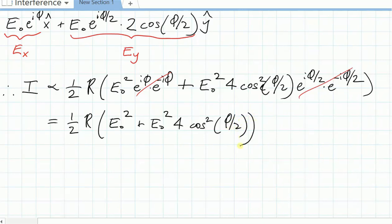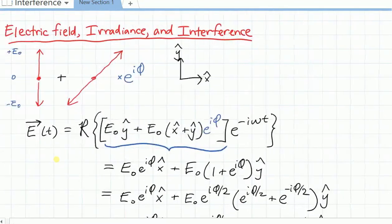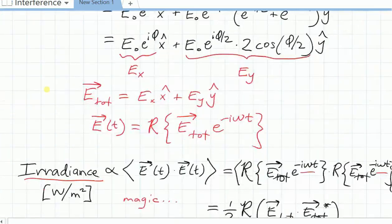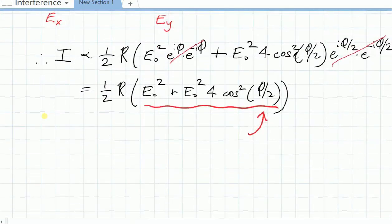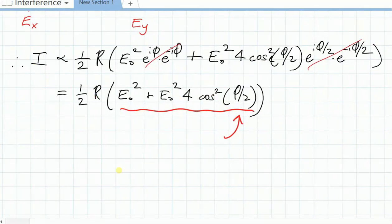And this is the important final result here, that there remains a term here, a cosine squared of phi over 2, which is an interference term. As we vary the phase difference between those two sources at the very beginning up here, as we vary how they phase relative to each other, we get a real intensity difference and irradiance difference in our final measurement.